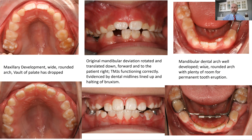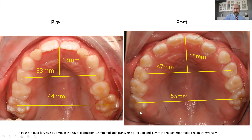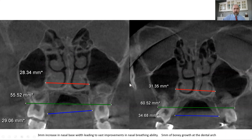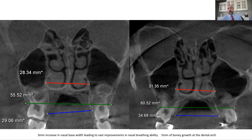The lower jaw was also well developed with a nice wide round arch and plenty of room for permanent tooth eruption. We gained a substantial amount of space for tooth eruption, and lots of space for the tongue to now function where it was trapped before. We went through two appliances to get him to that position. Another interesting finding: when we looked at his nasal base width pre-treatment to post-treatment, we gained a good three solid millimeters of volume in that space, vastly improving his ability to nasal breathe.